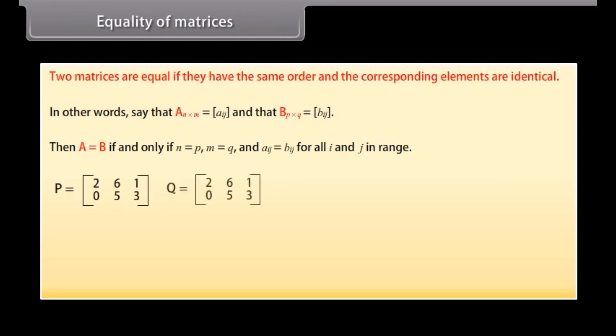Matrices P and Q are equal. Here are two matrices which are not equal even though they have the same elements.